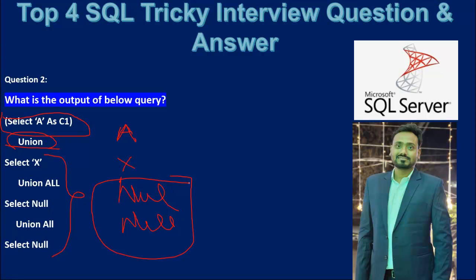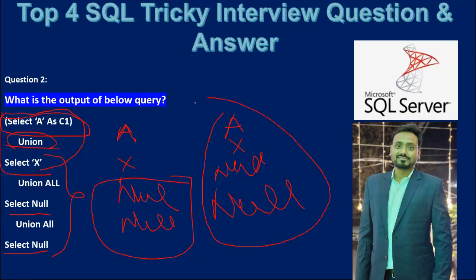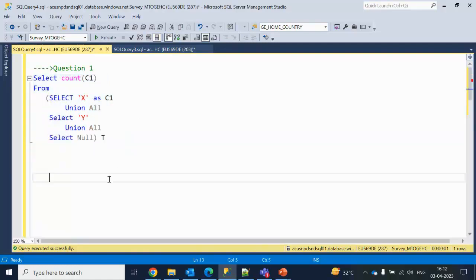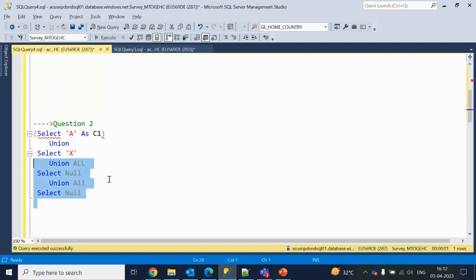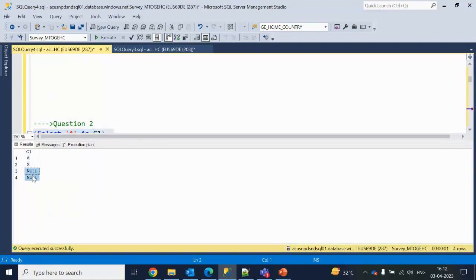Null will appear two times because execution starts from the top. First, the UNION executes, returning a and x. Then UNION ALL with null adds a null, and UNION ALL again adds another null. So it returns four rows: a, x, null, null. The catch is the UNION vs UNION ALL precedence. Let me jump to SSMS and execute — as you can see, it returns a, x, null two times.